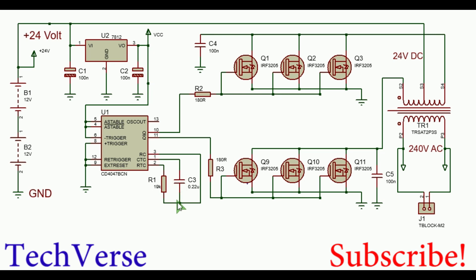The capacitor charges and discharges through the resistor R1, and at RC you will have a sawtooth which will be compared and used to generate square wave output pulses at both pin 10 and 11.